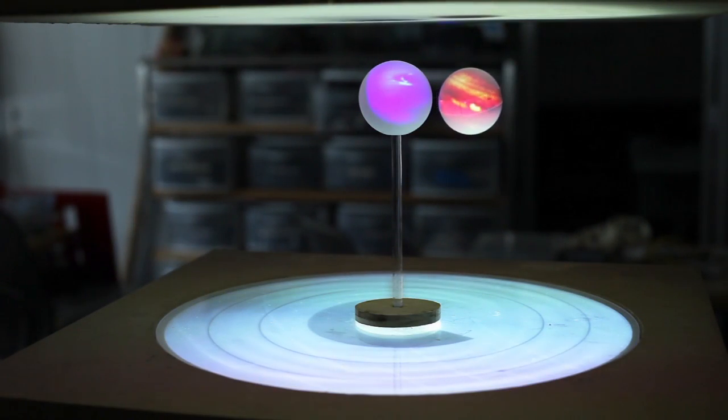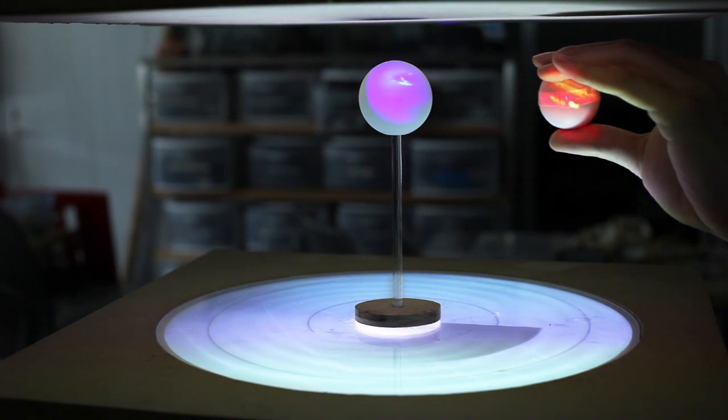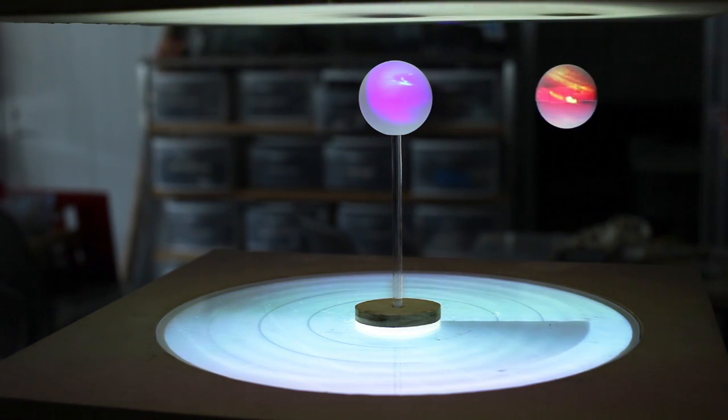You can also change the orbit of a revolving planet, which will then change the velocity, confirming Kepler's law.